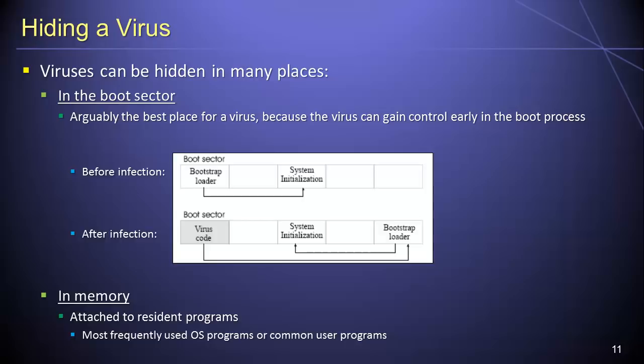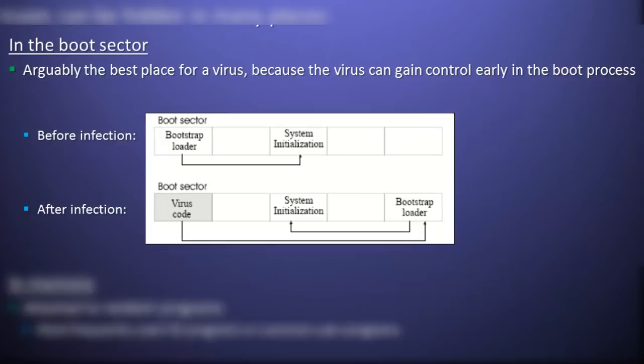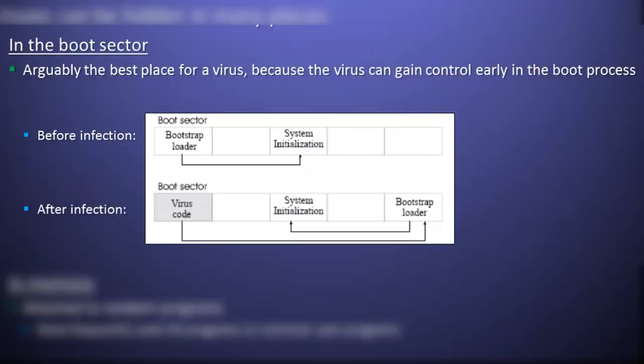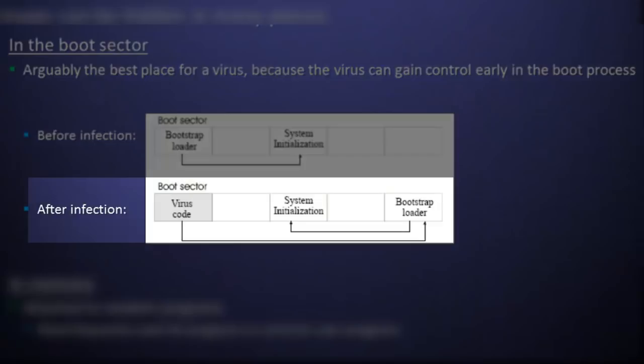Arguably, the best place for a virus to be hidden is in a machine's boot sector. A boot sector is a region of a storage device that contains program code which allows a computer to load its operating system. When a computer is powered on, the BIOS loads the program code from the boot sector into memory, and the computer executes this code to initialize its operating system. Since virus detection programs are application programs that require the operating system to be running, a virus hidden in the boot sector may avoid detection since it will have been activated before any virus detection programs were activated.